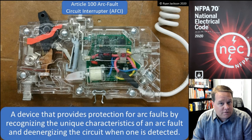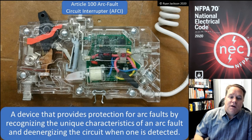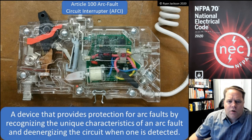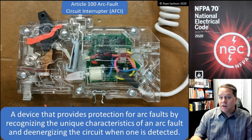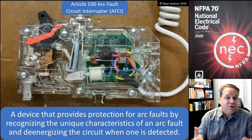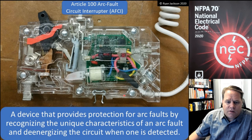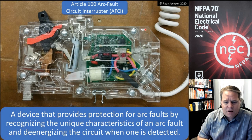Looking at our clear circuit breaker here, everything on the left is just your regular old thermal magnetic circuit breaker that pretty much every molded case circuit breaker is going to have. It's the stuff on the right that makes this an AFCI, and the most obvious part is the circuit board that we can see back there.